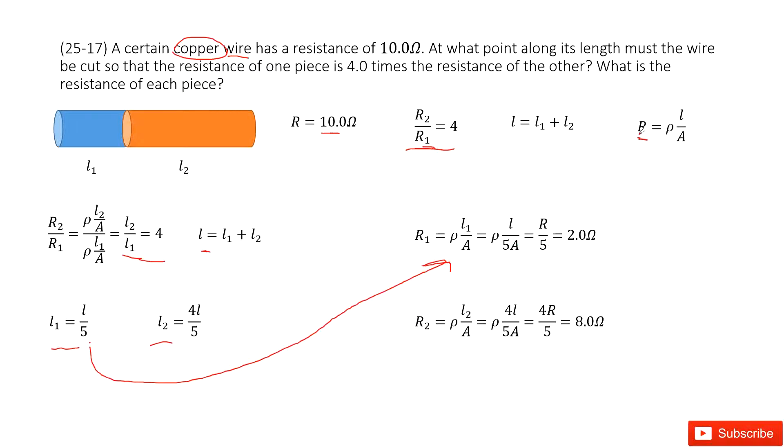You can simplify it. Since R is ρL divided by A, we replace ρL divided by A with R. Then R is 10, so 10 over 5 equals 2.